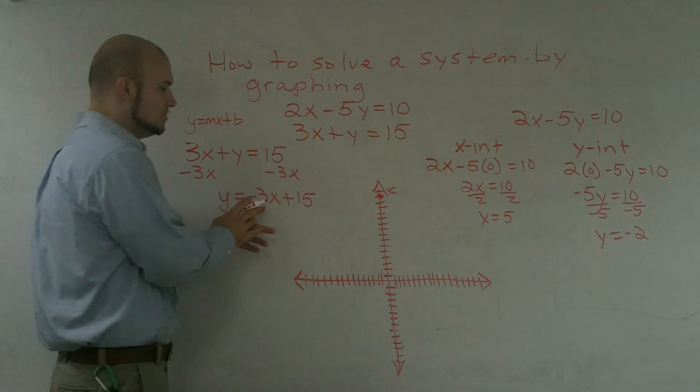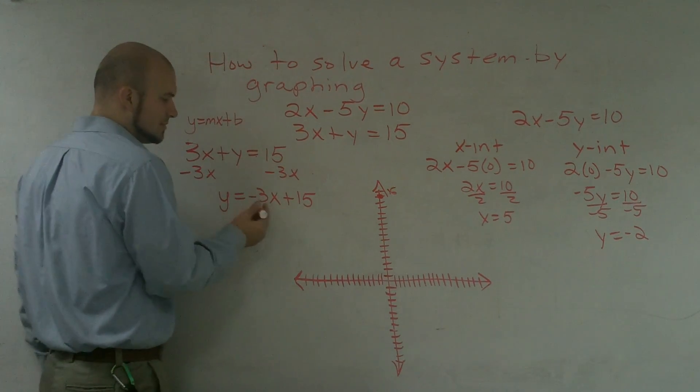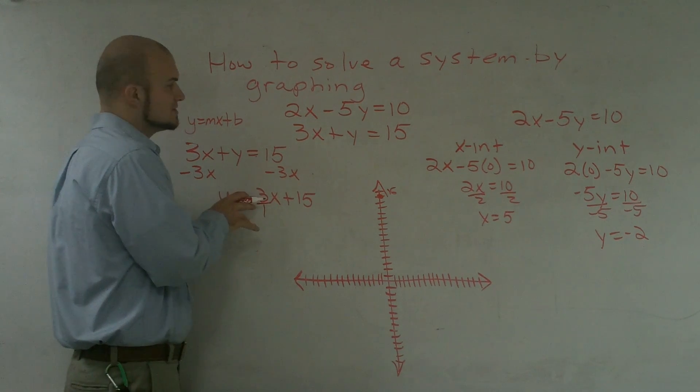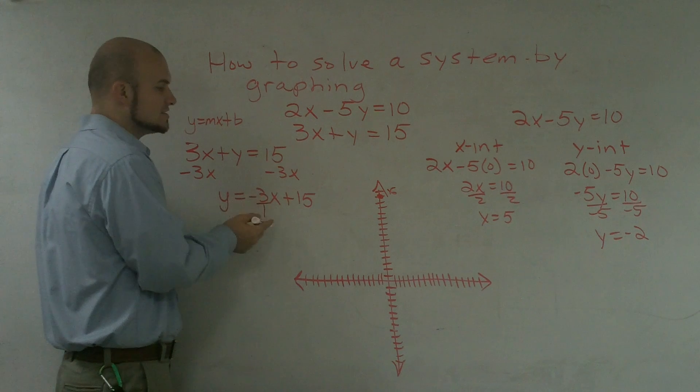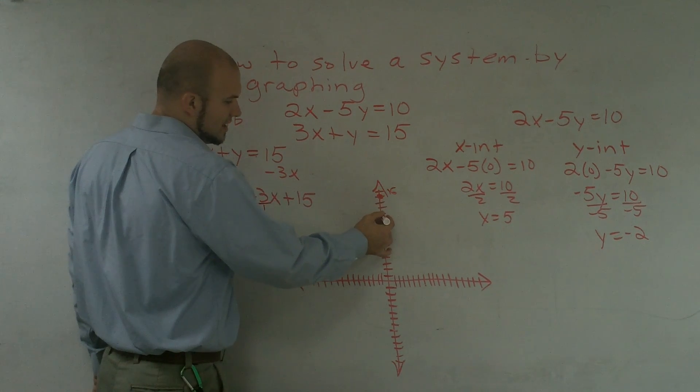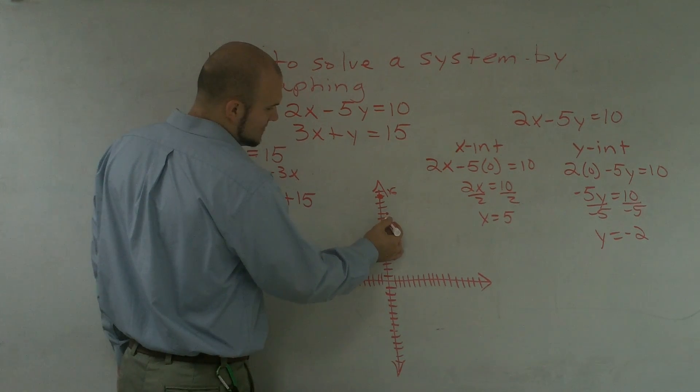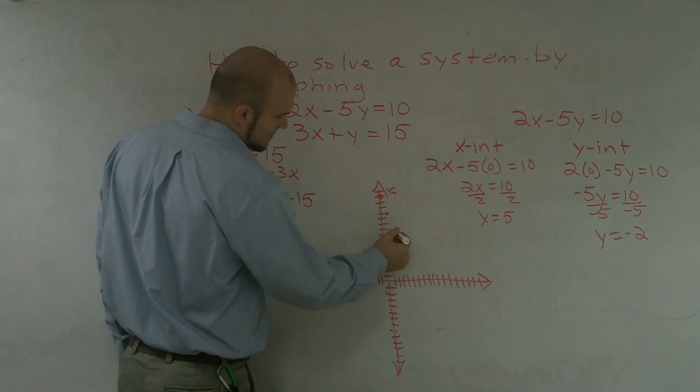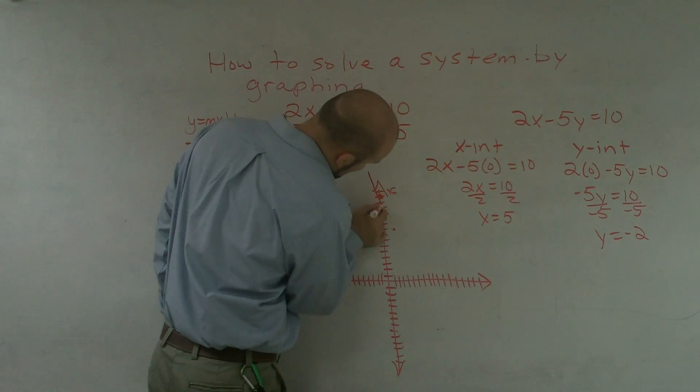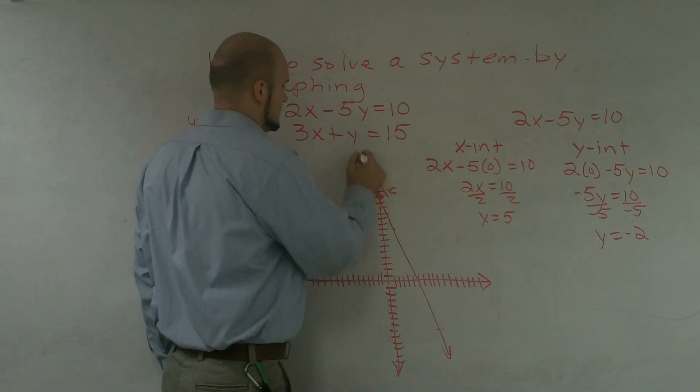But usually, when we're graphing it, we want to have it in a fractional form. Well, since this is a whole number, to put it in fractional form, I'm going to put it over 1. Therefore, what this is telling me, if you guys remember, slope can also be read as rise over run. So I'm going to rise -3, which would be down, and then I'm going to run, go over 1. And I'm just going to continue this pattern. Down 3 over 1. So roughly, my graph is going to be in that form.